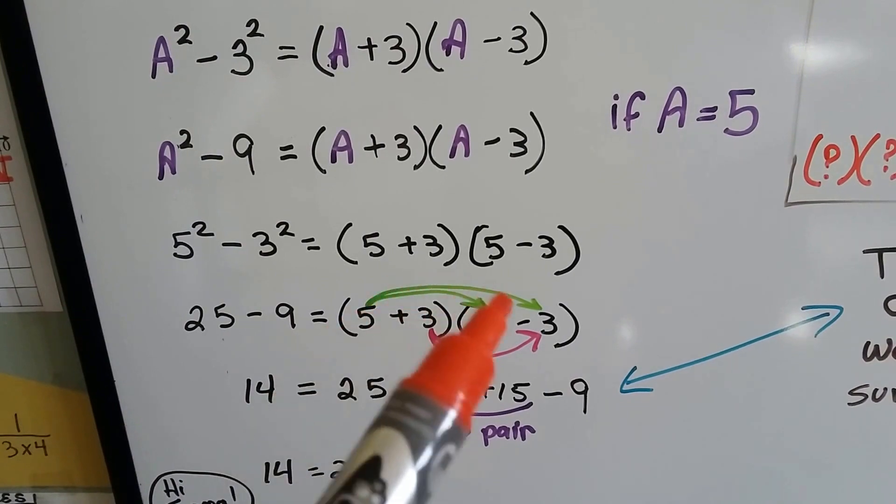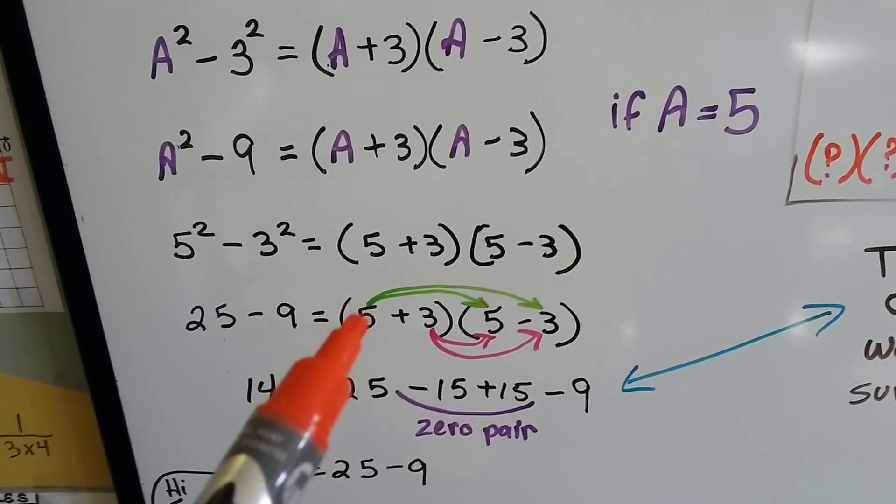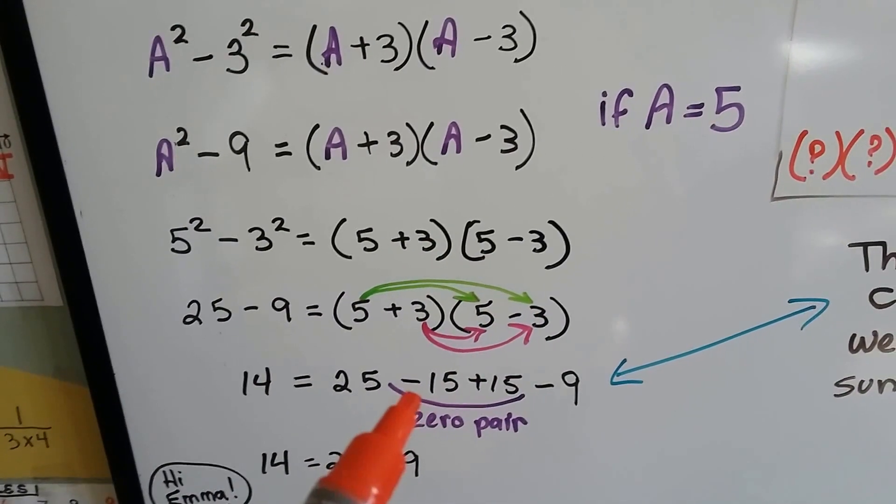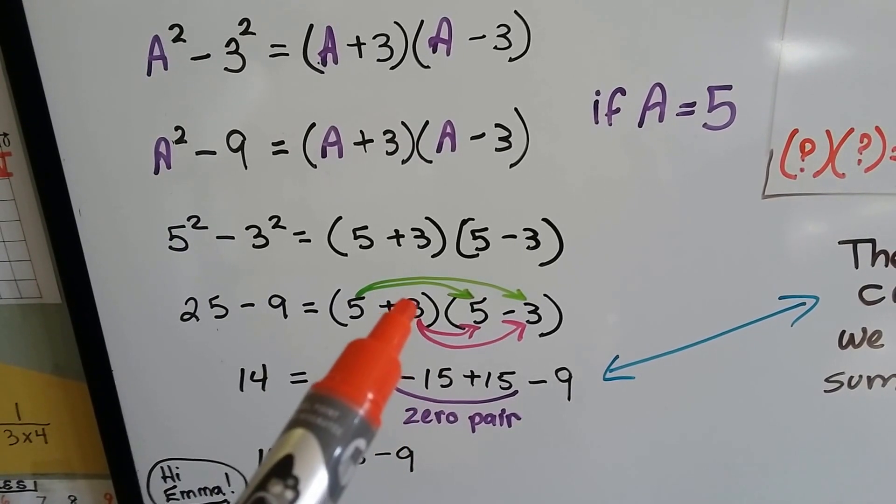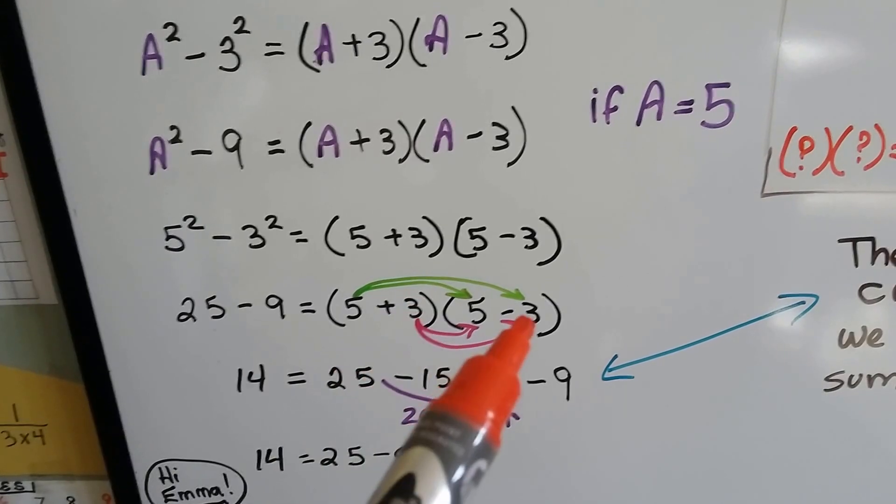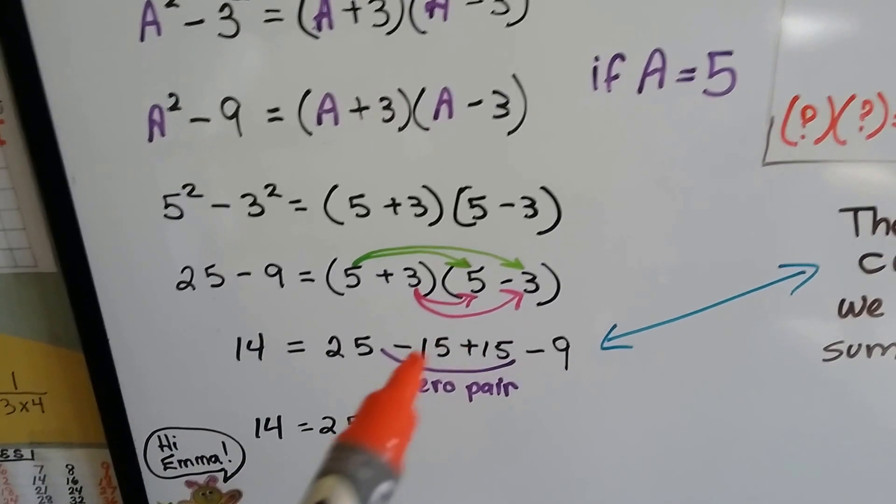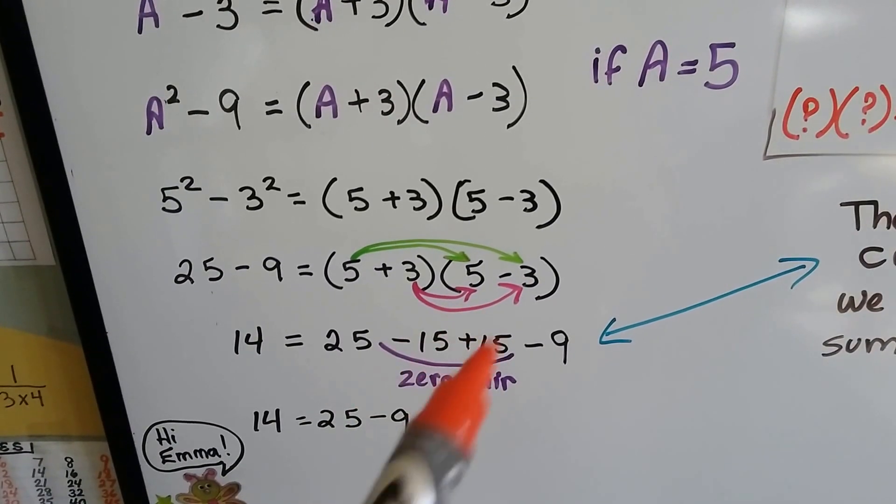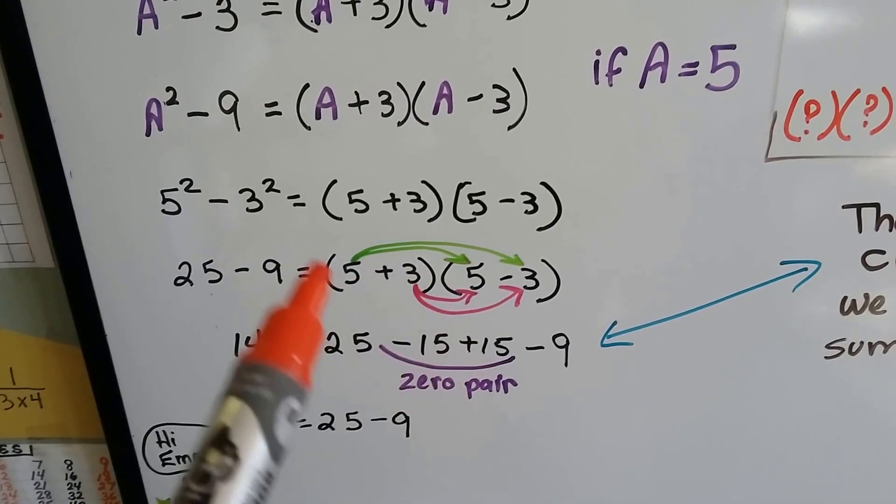The 5 times 5 is 25. The 5 times negative 3 is minus 15. A positive 3 times a positive 5 is a positive 15. And a positive 3 times a negative 3 is a negative 9.